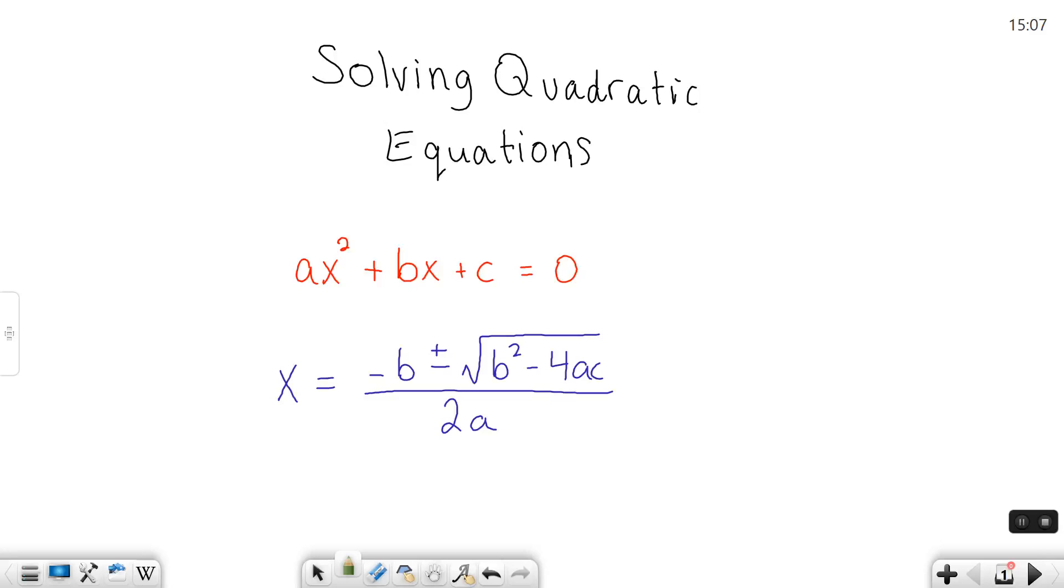What I've written up here is, in red, the standard form of a quadratic equation. It's ax squared plus bx plus c, where a, b, and c are numbers. They can be positive, they can be negative, they can be fractions, decimals, they can be zero, but they're numbers.